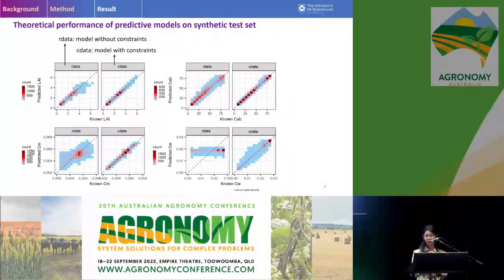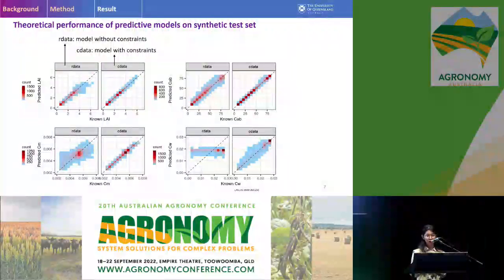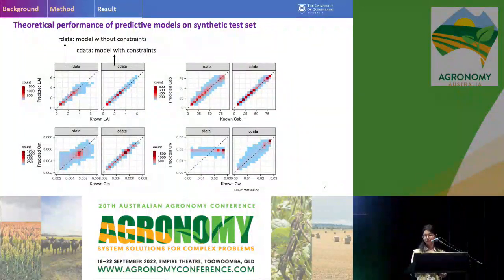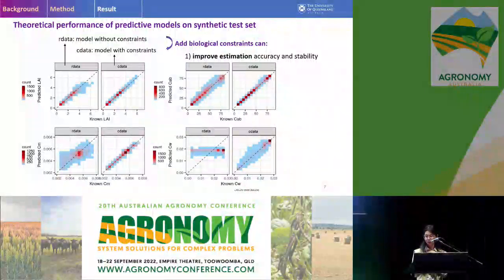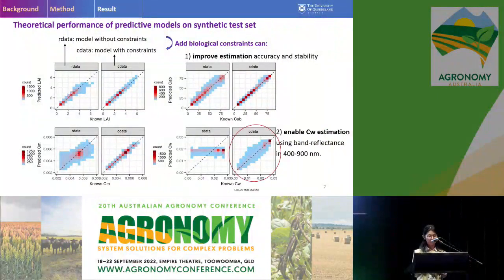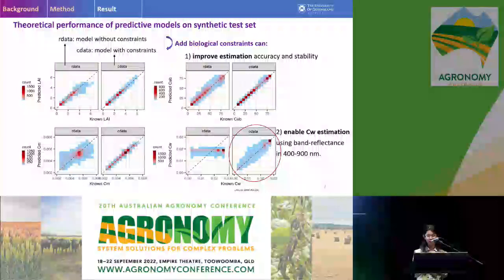Here is the theoretical performance of the predictive models on the embedded test set. The X-axis shows the observed value of the crop trait while the Y-axis shows the predicted value. For each figure, the left one shows model performance without biological constraints while the right one shows performance with biological constraints. We can see that adding biological constraints can improve estimation accuracy and stability. For the estimation of leaf chlorophyll content, adding biological constraints enables leaf water content to be estimated using the reflectance patterns in the visible-to-near-infrared range.